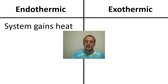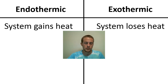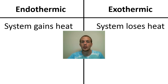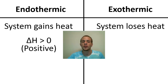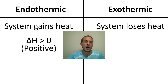In an exothermic process the opposite happens — the system is going to lose heat and the surroundings are going to gain that exact amount of heat that has been lost by the system. Endothermic and exothermic not only refer to the system gaining or losing heat, but they also refer to the sign of delta H, which is the change in enthalpy. Enthalpy is essentially heat under conditions of constant pressure, which are very common. In an endothermic process, delta H is positive — greater than zero.